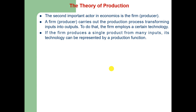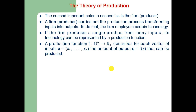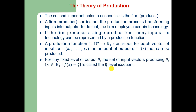A production is a technical or physical way of transforming inputs into output. A production function describes for each vector of inputs — an n-tuple from x1 up to xn — the amount of output q as a function of the input vector that can be produced. For any fixed level of output q-bar, the set of input vectors that produce that fixed level of q is known as the q-level isoquant.